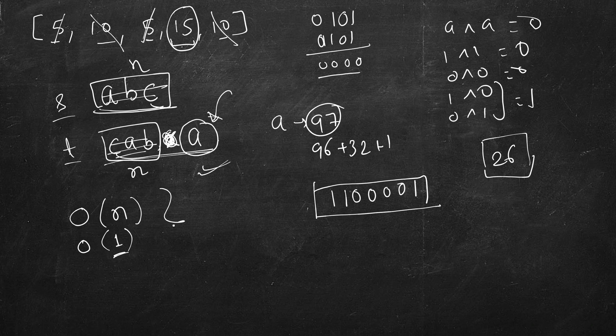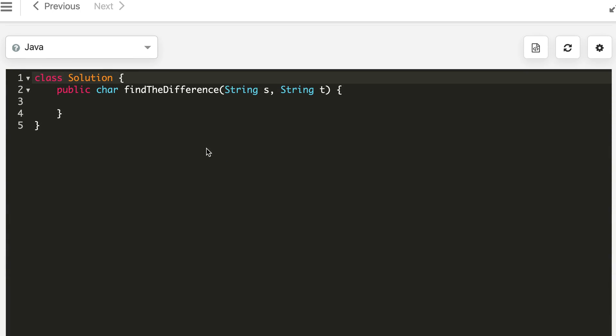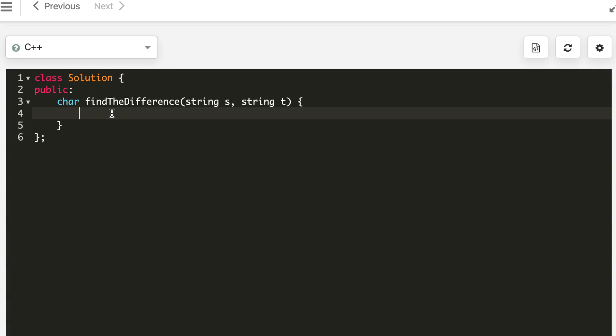Let's write the code for this. It should be very simple and trivial. So let's start with C++. Characters in s, c = c XOR s. Characters similarly, c XOR t in t. And return c. That's it.